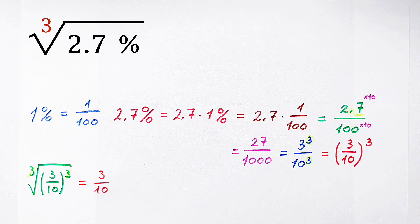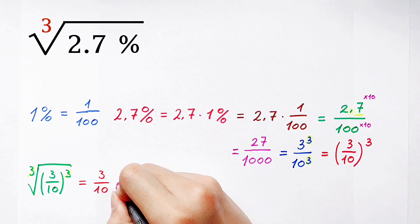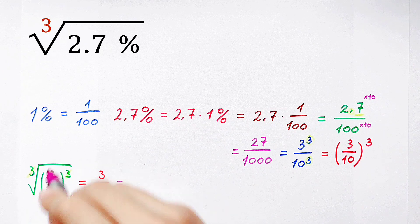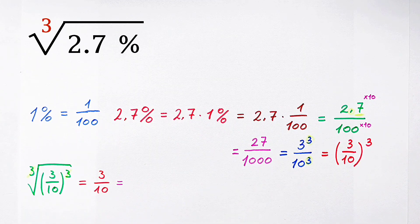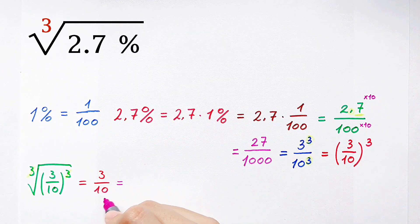And our value is 3 divided by 10. What's the value of 3 divided by 10? Because 1 percent is 1 over 100, so you have to write the denominator as 100.